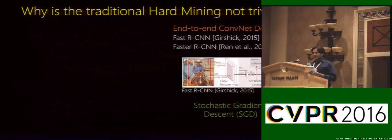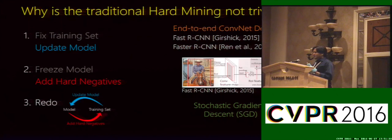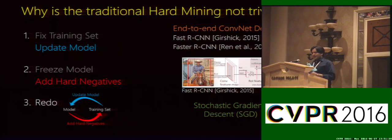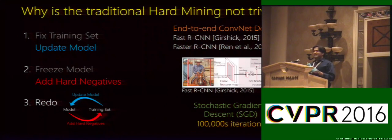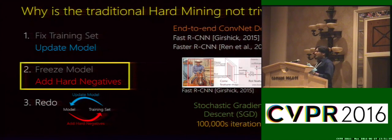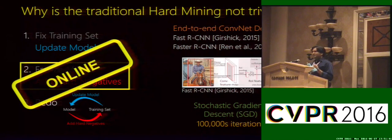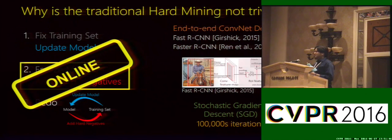But why is it not trivial? Recall that in Bootstrapping, we alternate between updating our model and freezing our model to find hard negatives. Training a modern object detector requires hundreds of thousands of SGD iterations, and freezing it, even for a few iterations, is going to drastically slow down our training. What we need is a purely online form of selecting hard examples which plays nicely with Stochastic Gradient Descent.